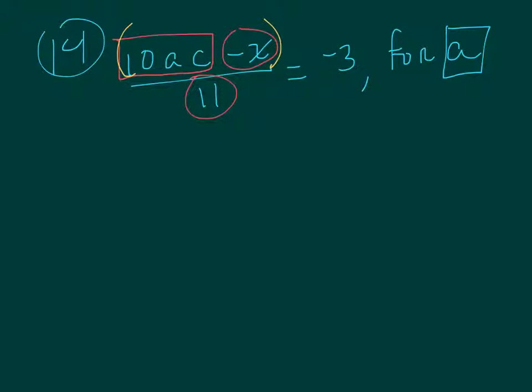I can get rid of the 11 easily. Since it's division, I can multiply both sides by 11. So if I multiply this side by 11 and multiply this side by 11, what ends up happening is those 11s cancel out. I'm going to bring everything down and I get 10 times a times c minus x equals, well I can go ahead and multiply that, so negative 3 times 11 is negative 33.